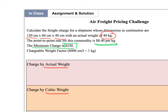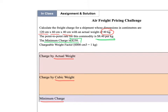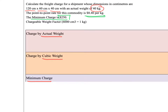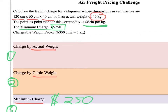There are three different ways to price this: number one by weight, number two by volume (cubic weight), and number three by the minimum charge. The minimum charge is the easiest — we simply put down $250.